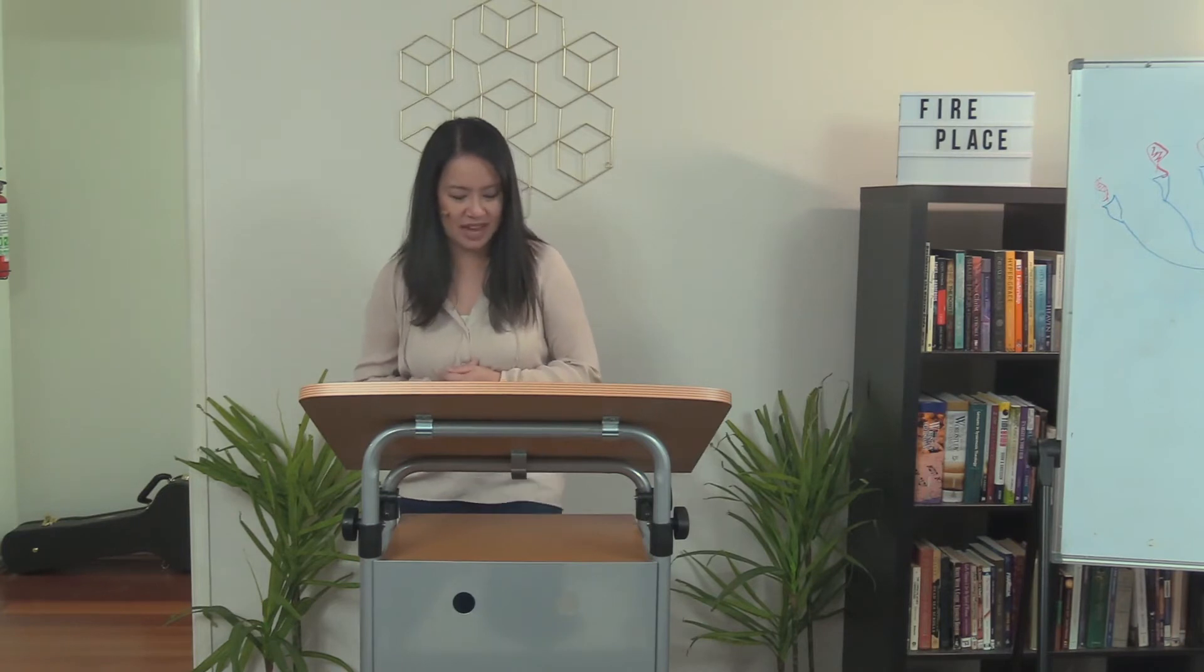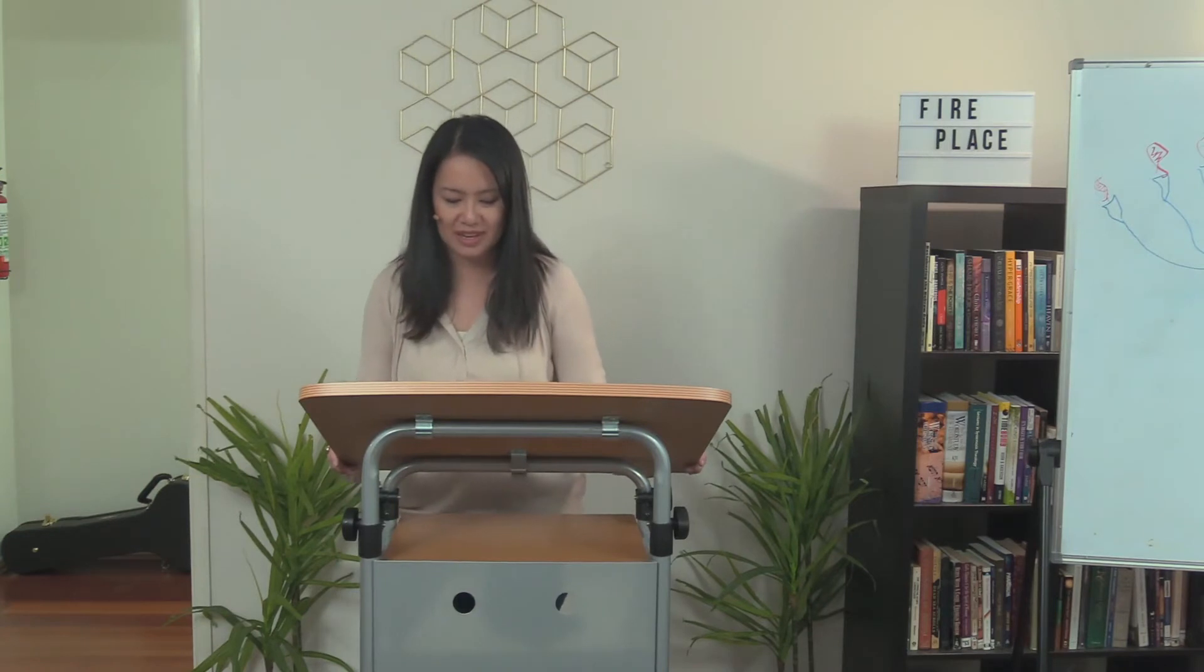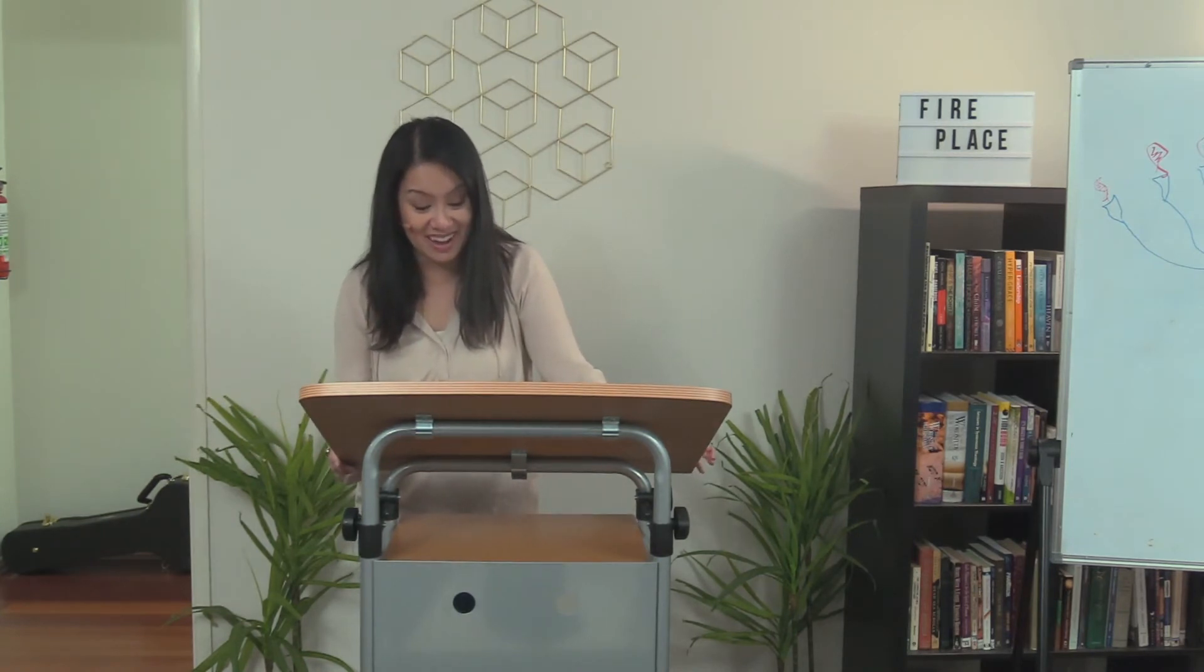And verse four, at the sound of their voices, the doorposts and thresholds shook, and the temple was filled with smoke. Verse five, woe to me, I cried, I am ruined, for I am a man of unclean lips, and I live among a people of unclean lips, and my eyes have seen the King, the Lord almighty.